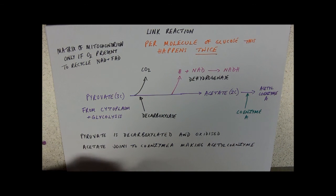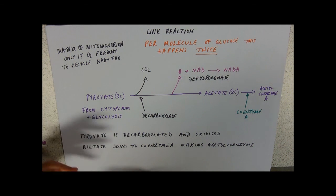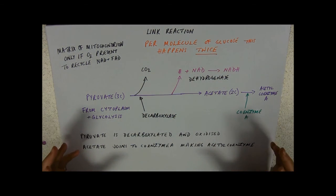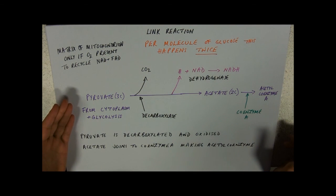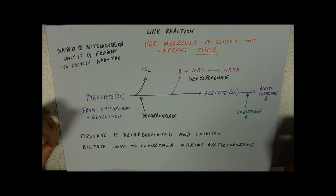Because we've made two pyruvates from each molecule of glucose. In an exam, you may have to say what's going on in a link reaction, starting with one pyruvate, which would lead to one turn of the Krebs cycle. Or you might have to say what's happening per molecule of glucose, particularly in terms of carbon dioxide release or the number of NADHs, and then linking that into ATP production.